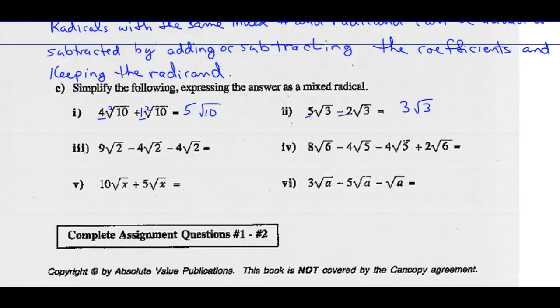Part 3: they've got the same radical and index number, so we keep that radical 2, and we add or subtract the coefficients: 9 minus 4 minus 4. 9 minus 4 is 5, and 5 minus 4 is 1, so you've got 1 root 2. We leave it just like that — you can put the coefficient of 1 in if you'd like, but you do not need to.